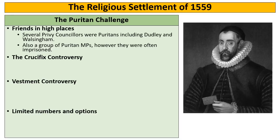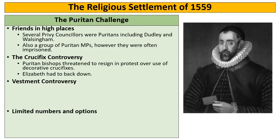The crucifix controversy is an example of the Puritans being a strong challenge, because it shows them forcing Elizabeth to back down. A crucifix was a statue of Christ being crucified in the church — part of the decoration which extreme Protestants like the Puritans hated. Puritan bishops threatened to resign in protest over the use of crucifixes, and because Elizabeth didn't have enough bishops to replace them, she was forced to back down and agree that crucifixes would be removed from all churches except her own private chapel.